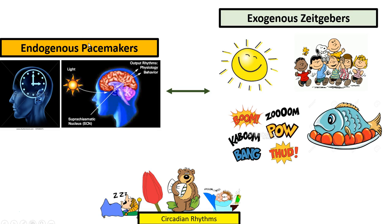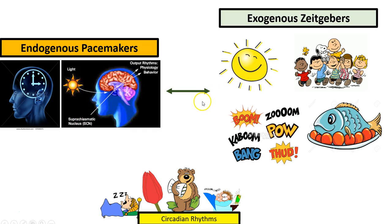Endogenous pacemakers is our body's internal clock. This has been linked to the suprachiasmatic nucleus located in our brain, also known as the SCN. This internal clock gears our body up to do certain types of behaviour. The endogenous pacemakers interlinks with the exogenous zeitgebers, which is all the environmental cues we have such as sunlight, social interaction, noise and food. For example, the SCN will detect sunlight and this signal sends for our body to reduce the amount of melatonin produced.